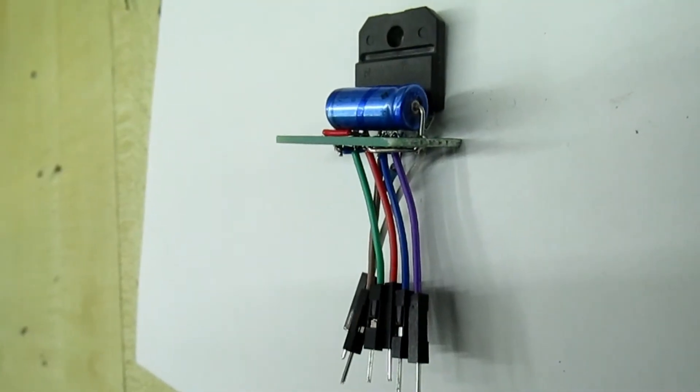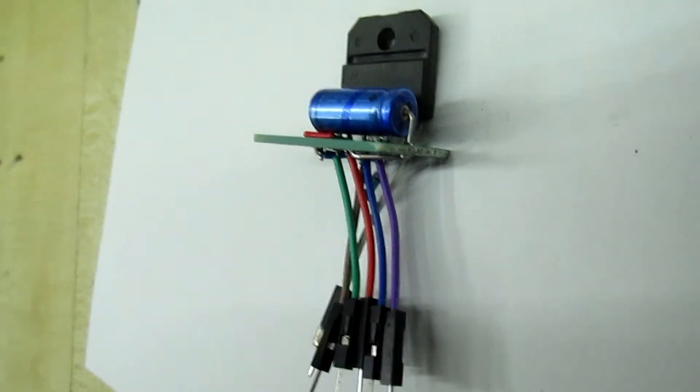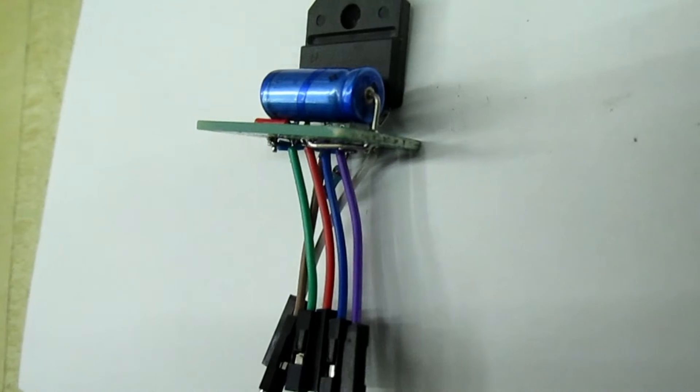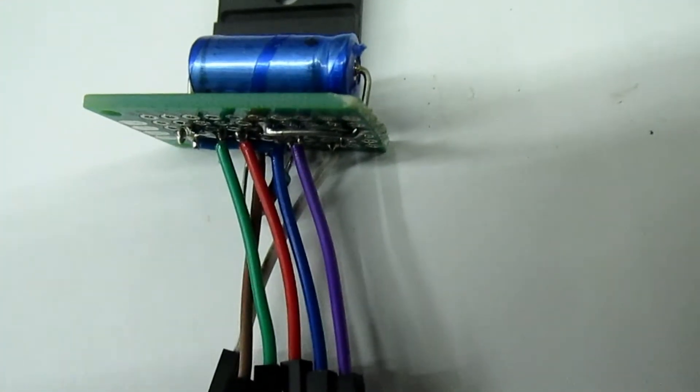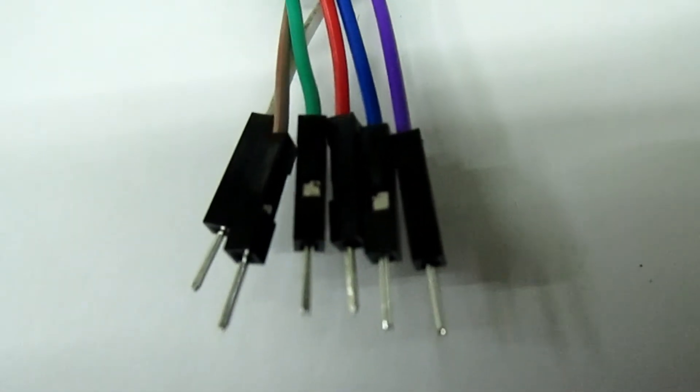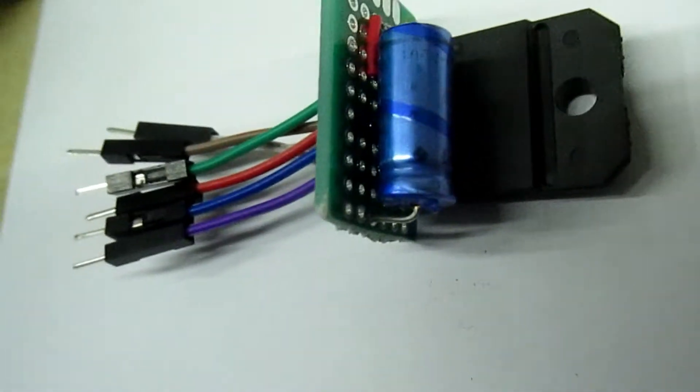So there we have the assembled PC board with the LM3886 on. I've attached some flying wires - the wires are color coded so I know which order they go in, and I've used some pins on the end so we can solder straight into the circuit board. I'll give you a view of the top.